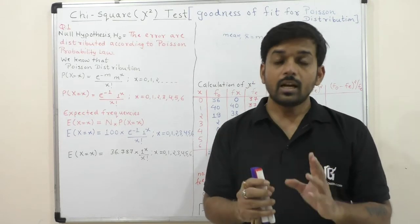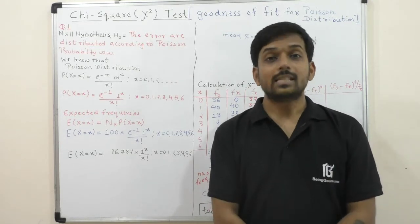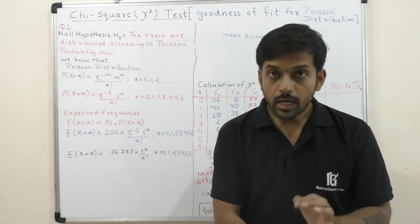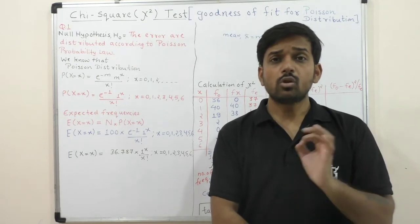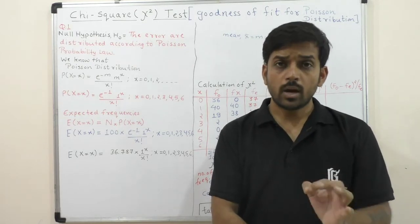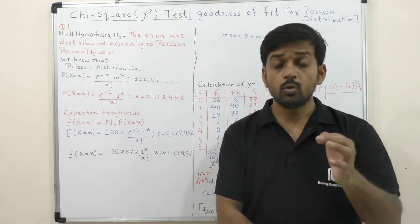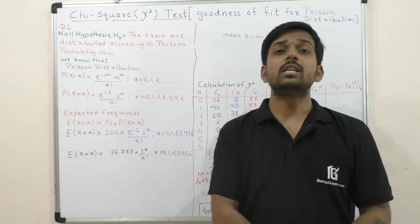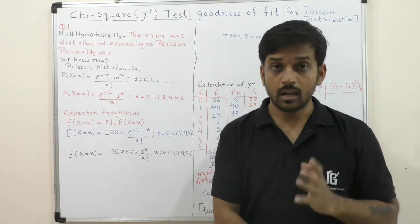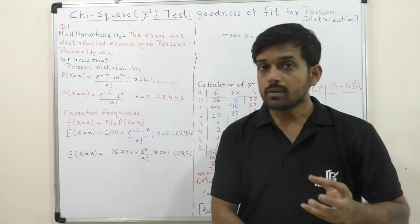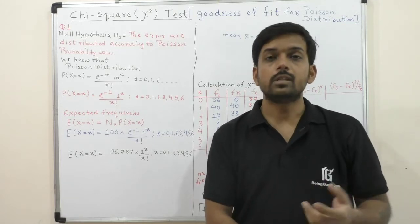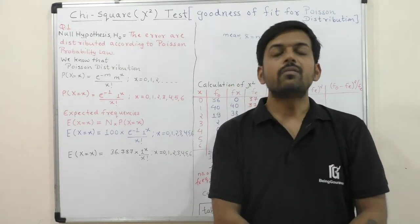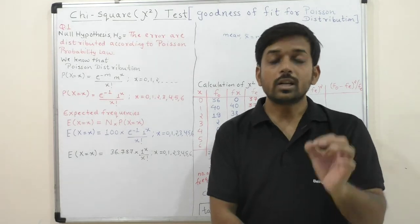Now, we have a question of how the expected frequency will be calculated. In chi-square test, we will see the independence of attributes, binomial distribution goodness of fit, and uniform distribution goodness of fit. The expected frequency will be different from the theoretical frequency. In this video, we will see the expected frequency of Poisson distribution.